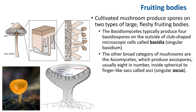The other broad category are ascomycetes, which produce ascospores — usually eight — inside a spherical or finger-like sac called an ascus. This is a typical mushroom with gills, and on those gills you see basidia cells carrying four basidiospores. This is a cup-like ascocarp, and inside the ascocarp you have individual asci, each containing eight ascospores.